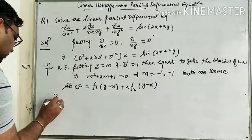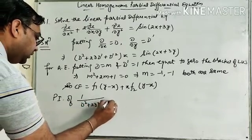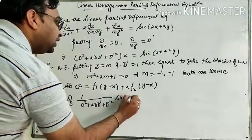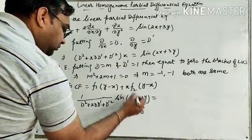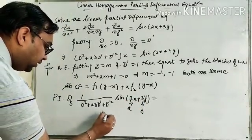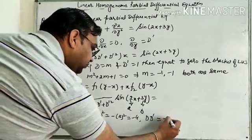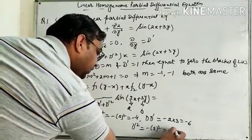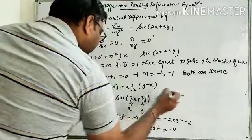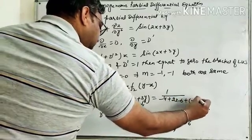Now we find PI = 1/(D² + 2DD' + D'²) · sin(2x + 3y). Here A = 2 and B = 3, so we replace D² by −2² = −4, DD' by −2×3 = −6, and D'² by −3² = −9. On replacing, we get −4 + 2(−6) + (−9) · sin(2x + 3y).